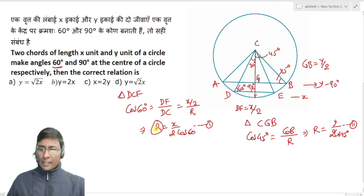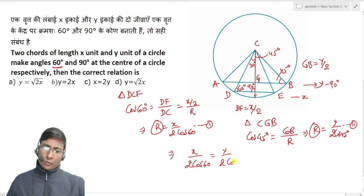Here R and here R are both radius of the circle, so they are equal. Therefore, x by 2 divided by cos 60 degrees equals y by 2 divided by cos 45 degrees. x by 2 times cos 60, where cos 60 value is simply 1 by 2.